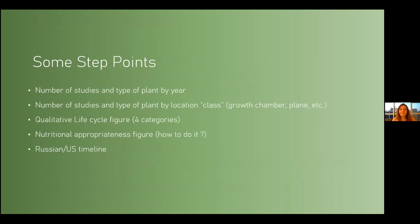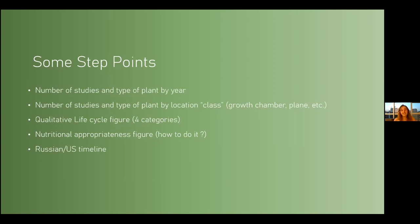We have some challenging step points. A number of studies and type of plant by year — these are actually a little bit hard for us because we are still dealing with these problems. A number of studies and type of plant by location, class, growth chamber, and plain. A qualitative life cycle figure — we concluded with four categories but we are not sure about it now. An additional appropriateness figure — we don't know how to do it. And a Russian-US timeline — we should figure that out also.